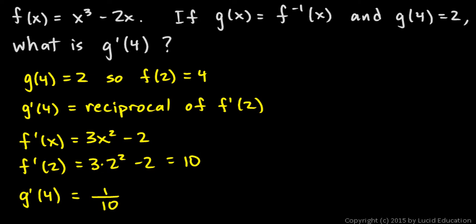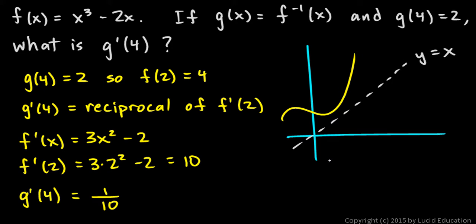Now in this problem, this step might be the tricky step, and I think a picture might make that clear. So let's draw some x and y axes. And this is a cubic function, so maybe it looks something like this. And the inverse of that function will be a reflection across the line y equals x, and that's true in general. A function and its inverse are reflected across the line y equals x.